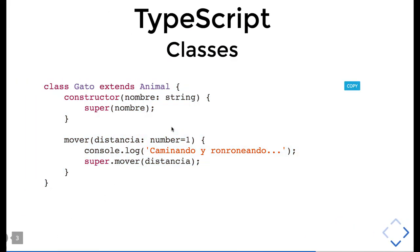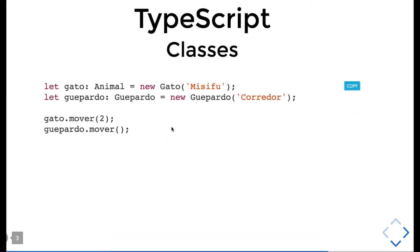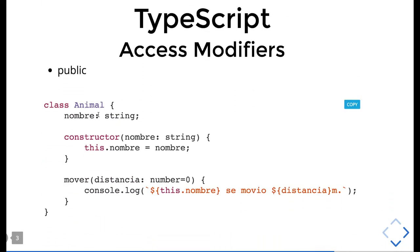Now, extending to the types of classes where one class extends another class. Before talking about access modifiers, let's look at how we create an object of the class. 'Ghetto' here is a variable holding an object of the Animal class. This is another variable holding an object of the other class, and then you can call the methods on them.